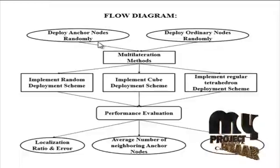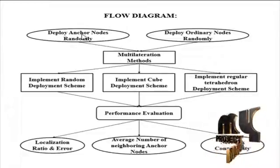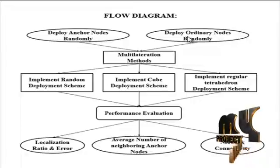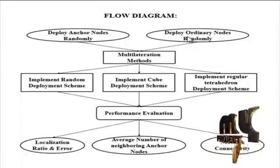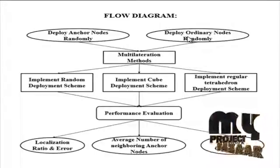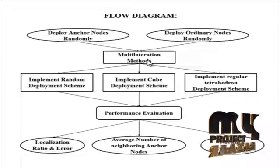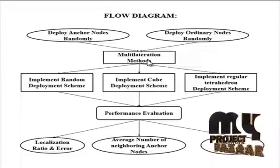Let us discuss the flow diagram for our process. Initially, anchor nodes and ordinary nodes are deployed in a randomized manner using either the random deployment scheme, cube deployment scheme, or regular tetrahedron deployment scheme. The multilateration method is used to calculate the coordinates of ordinary nodes.